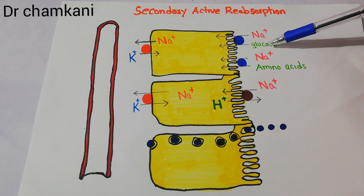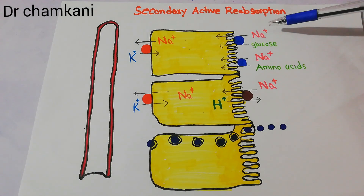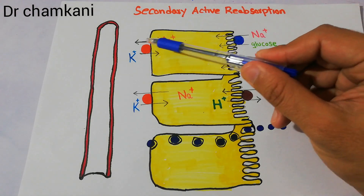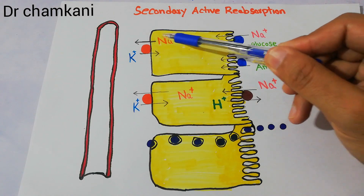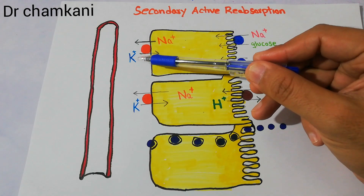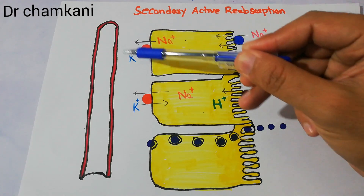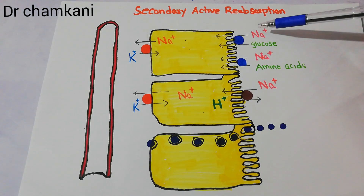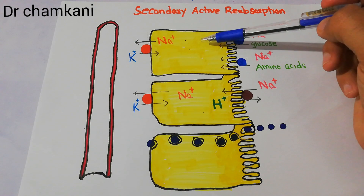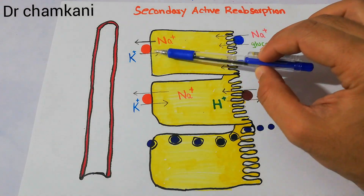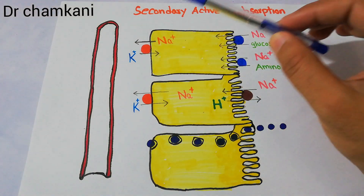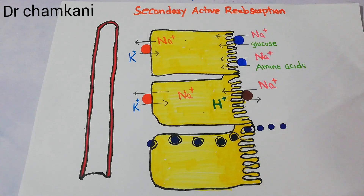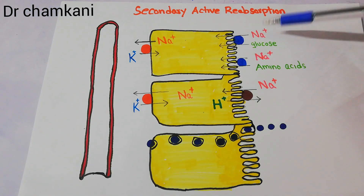Glucose is like a poor boyfriend and sodium is the rich girlfriend. Sodium's father — the sodium-potassium pump — is very rich and powerful. He is continuously exchanging sodium and potassium: throwing sodium out and throwing potassium inside the cell. This gives sodium a chance to enter into the cell, as sodium is continuously being pumped out, generating a concentration gradient.